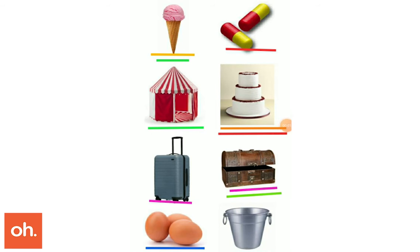An egg is almost spherical in shape, thus it has just one surface. An ice cream is made up of two shapes: a cone and a hemisphere. Similarly, a tent is made up of two shapes: a cylinder and a cone. The chest given here is made up of a cuboid and half of a cylinder.